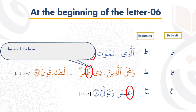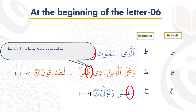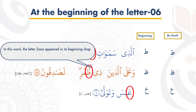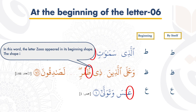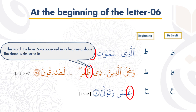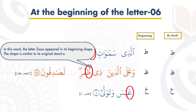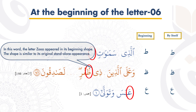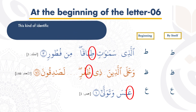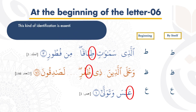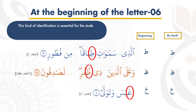In this word, the letter Zua appeared in its beginning shape. The shape is similar to its original standalone appearance. This kind of identification is essential for the students.